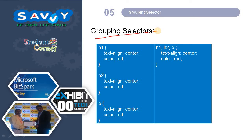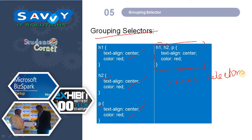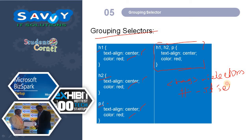Coming to the grouping selector: if h1, h2, and paragraph all have center and red styling, instead of writing them separately, we can write them in a single rule with comma separation — h1, h2, p — and the styling automatically applies to all of them. To recap: using a tag directly is an element selector; hash is used for ID selector; dot is used for class selector; and comma-separated multiple tags form a grouping selector.